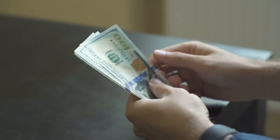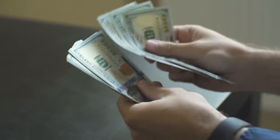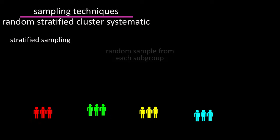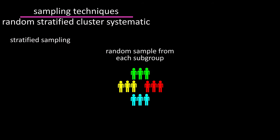For example, let's say you wanted to know how much money people saved on a yearly basis. You could have subgroups of people in their 20s and their 30s and their 40s and in their 50s. You would then take a random sample for each of these groups.